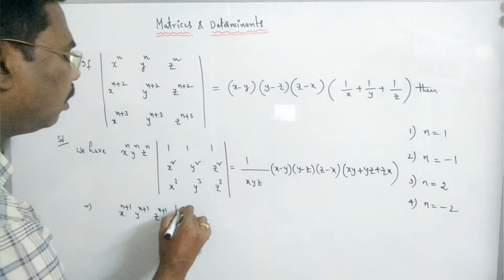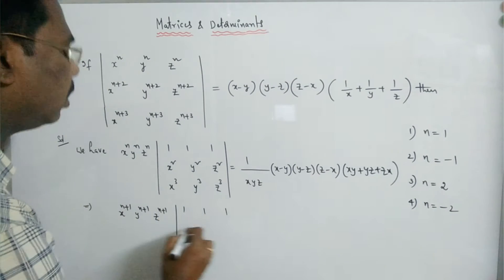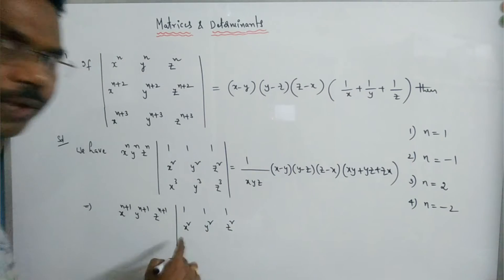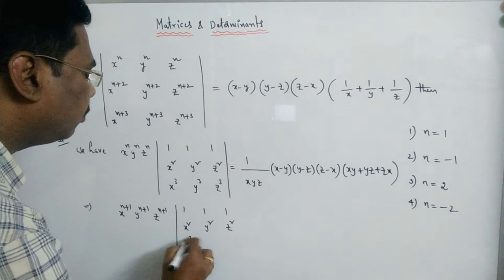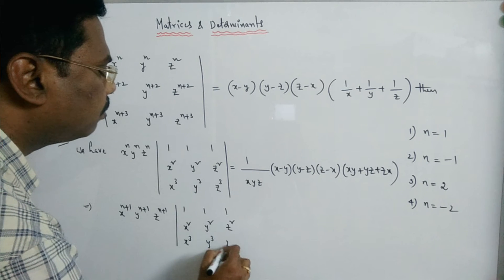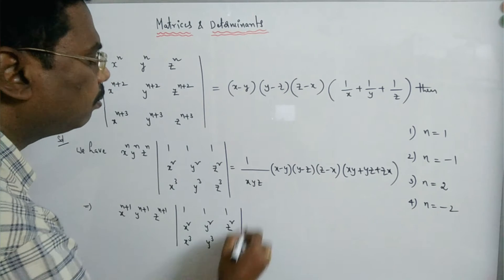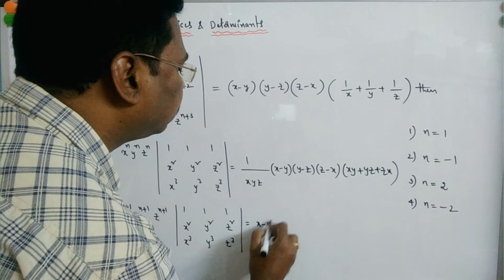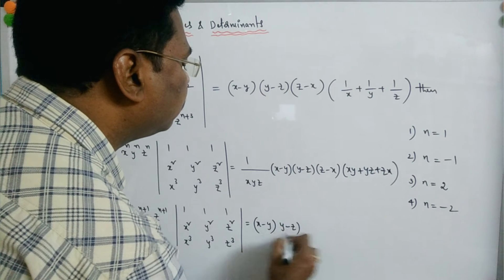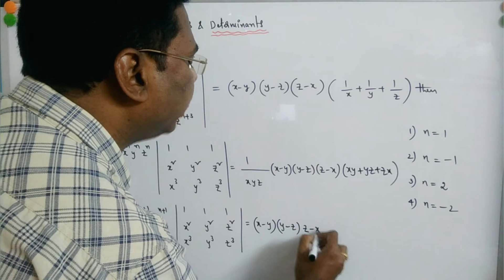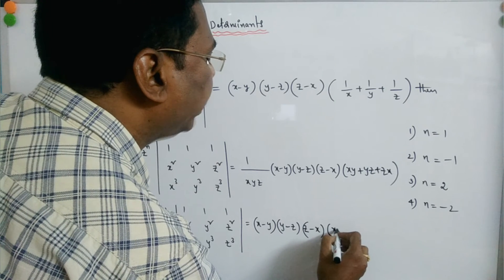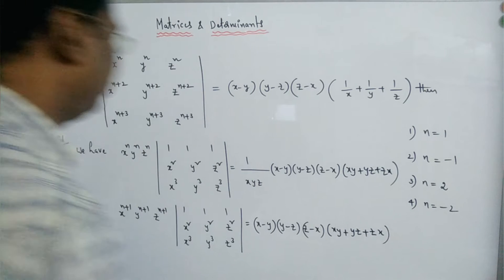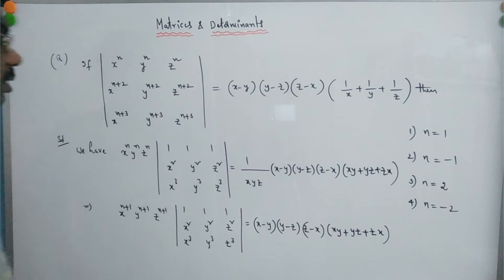Now the resulting determinant is: 1, 1, 1; x², y², z²; x³, y³, z³, which equals (x−y)(y−z)(z−x) into (xy + yz + zx).